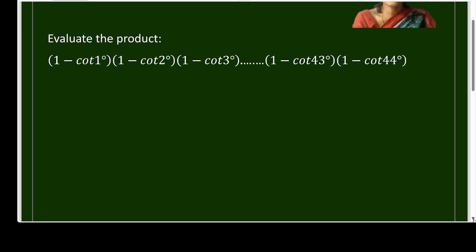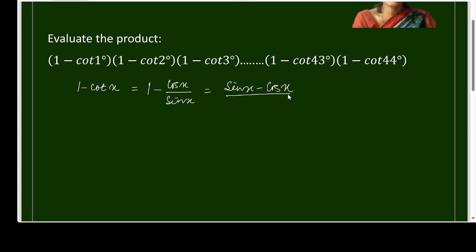I am writing a general expression taking cot x, or simply cot x. If I want to write 1 - cot x, then how to simplify this? I will write 1 - (cos x / sin x), which gives (sin x - cos x) / sin x.